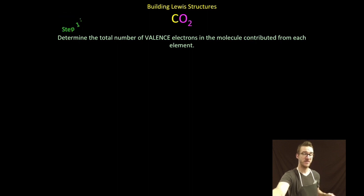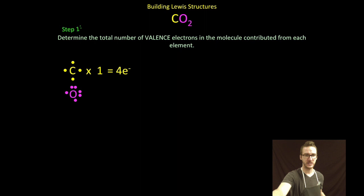Carbon is going to contribute four valence electrons, each oxygen is going to contribute six. I got one atom of carbon so a total of four valence electrons coming from my carbon. I've got two atoms of oxygen each contributing six, so I've got twelve total valence electrons coming from my oxygen atoms.